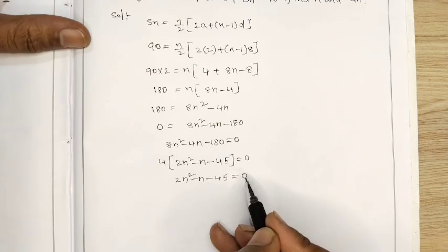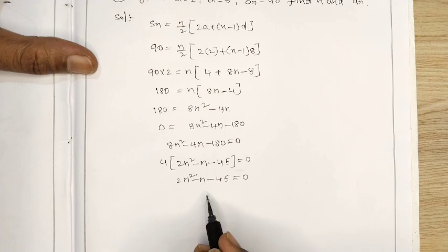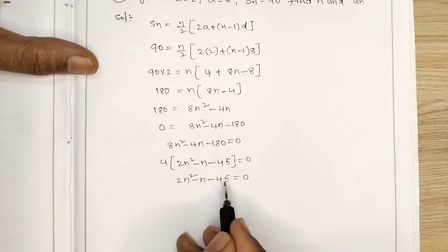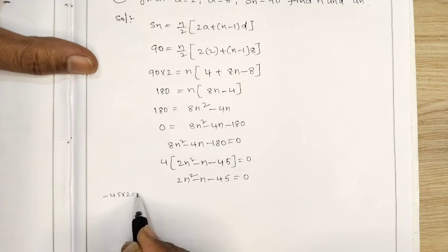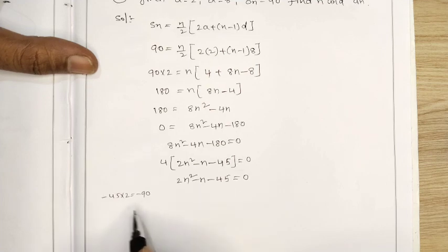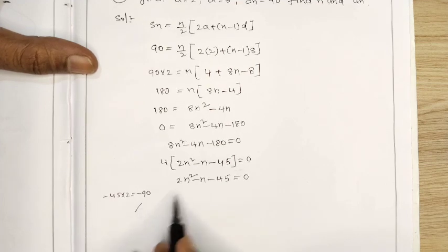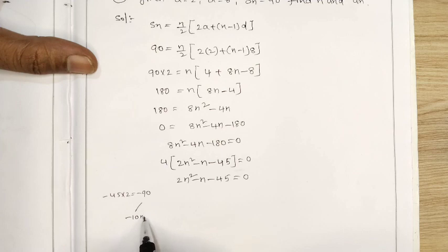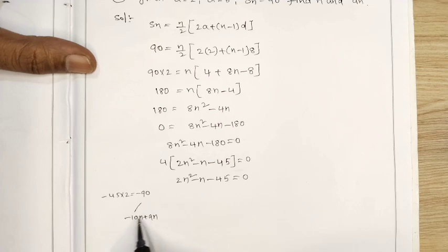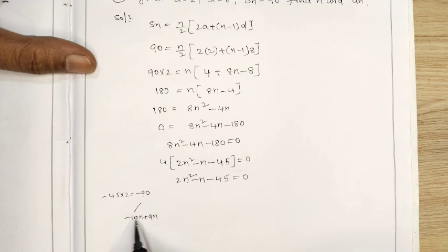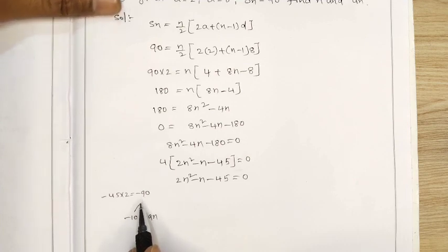We will split the middle term. 2 into 45 equals 90. We need two numbers whose product is minus 90 and sum is minus 1. We will use minus 10n and plus 9n, because minus 10n plus 9n gives minus n, and minus 10 times 9 gives minus 90.